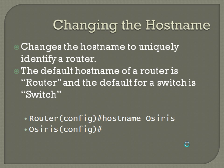You can also change the host name, which is used to uniquely identify the router. The default host name of a router is 'Router' (capital R), and the default for a switch is 'Switch' (capital S). The command is very simple — from configuration mode, type 'hostname' space, and then whatever you want the router to be named. In this case, we're changing its name to Osiris. You can see after that it changes the name to Osiris in config mode.